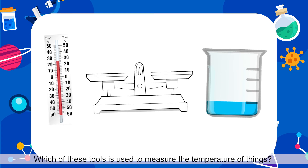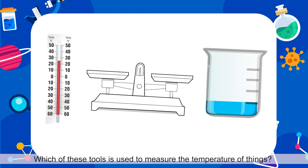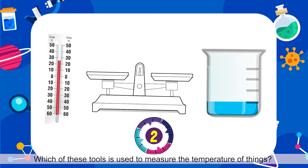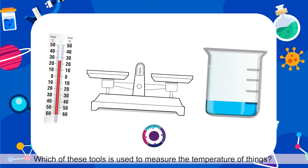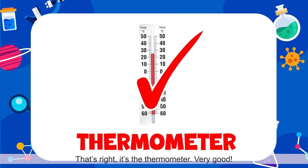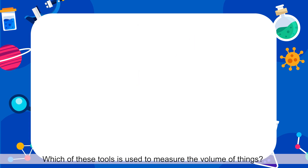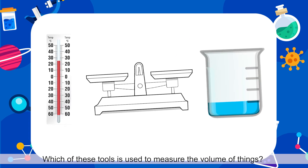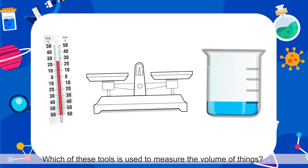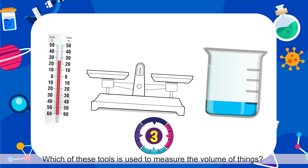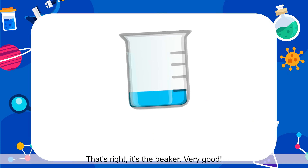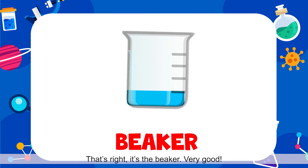Which of these tools is used to measure the temperature of things? That's right! It's the thermometer! Very good! Which of these tools is used to measure the volume of things? That's right! It's the beaker! Very good!